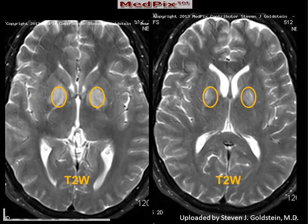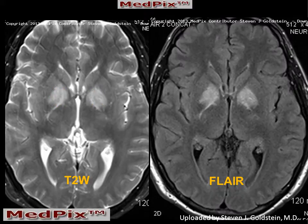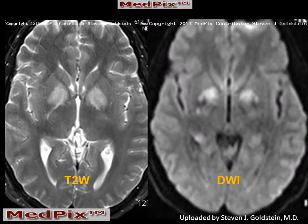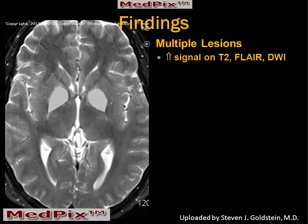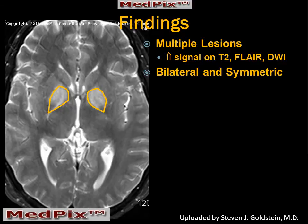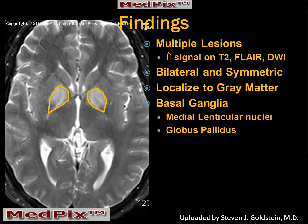We can see these on T2. We can see the same corresponding lesions on the FLAIR image. And we can also see that there is restricted diffusion in the globus pallidus bilaterally. So the findings in this case are multiple lesions consisting of increased signal on MR and decreased attenuation on CT. They're bilateral and symmetric, localized to the gray matter of the basal ganglia, and most particularly, involving the globus pallidus.